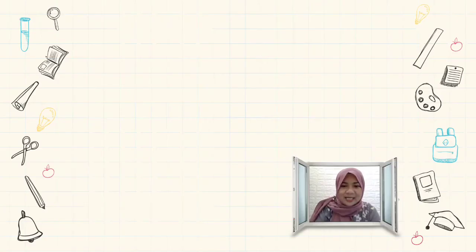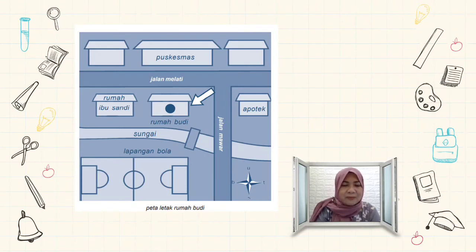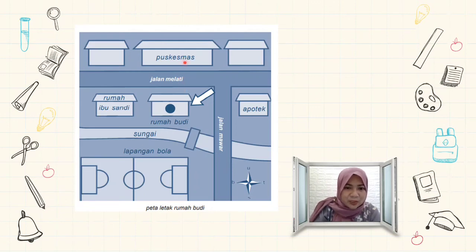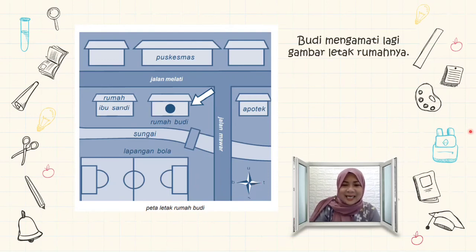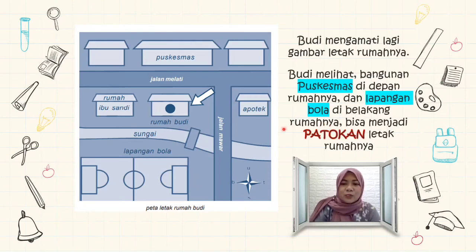Misalnya saya lanjutkan. Kalau di gambar, akan jadi seperti ini — ini peta atau denah rumah Budi. Ingat tadi: depannya ada puskesmas, samping kanannya ada apotik, samping kirinya ada rumah Ibu Sandi, di belakang rumah Budi ada sungai dan di belakangnya lagi ada lapangan sepak bola. Jadi puskesmas ada di depan, kemudian lapangan bola — ini bisa dijadikan patokan atau penanda.